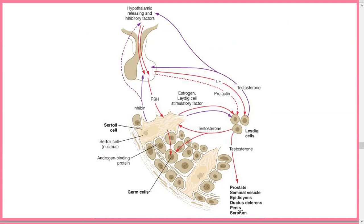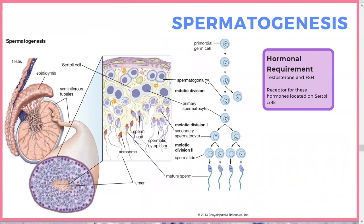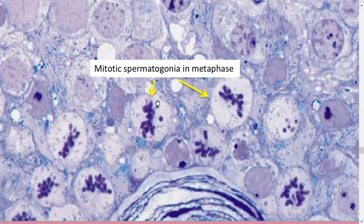Spermatogenesis: classic meiosis starting with a diploid cell ending with a haploid cell. It starts at the base of the Sertoli cells — that's where we have the primary spermatogonia — and slowly they develop and move toward the lumen, nourished by fluid. You can see mitosis happening at metaphase on the slide.